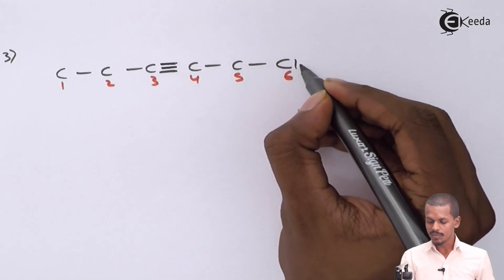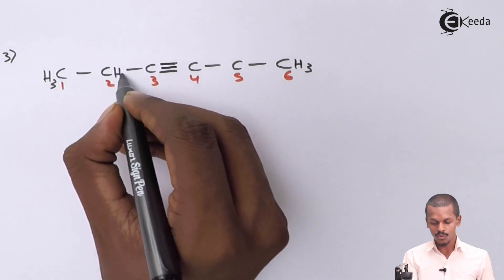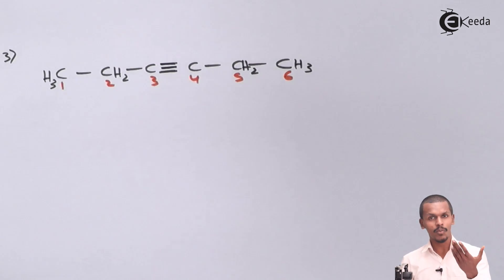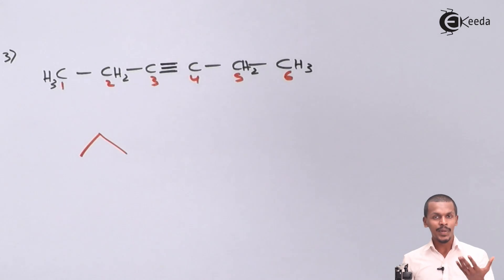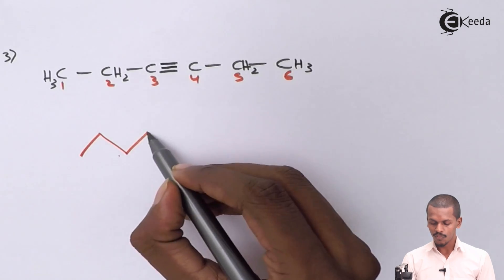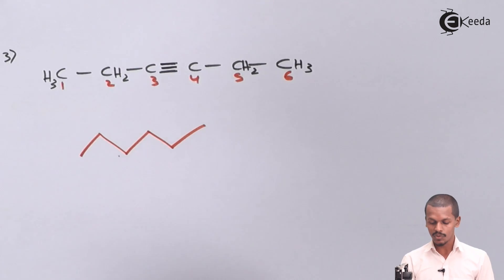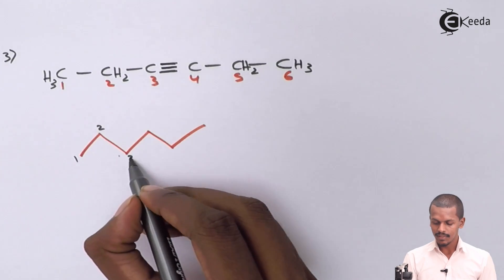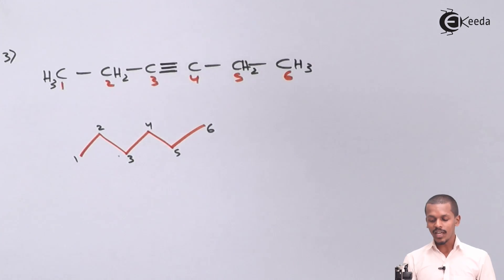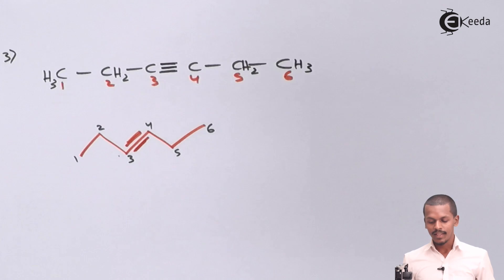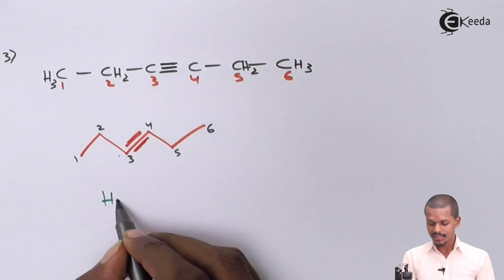Filling in the hydrogen atoms: CH3 at carbon 1, CH2 at carbon 2, then no hydrogen on carbons 3 and 4 (triple bond), CH2 at carbon 5, and CH3 at carbon 6. For the bond line formula, we draw 6 carbon atoms with the triple bond between carbons 3 and 4. The IUPAC name is hex-3-yne.